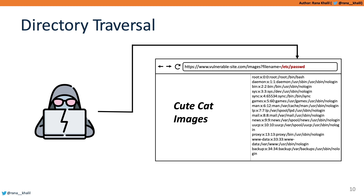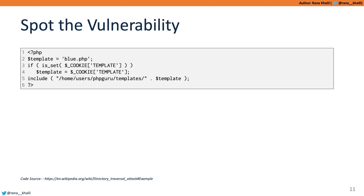Let's look at how these vulnerabilities are introduced in code. The root cause of 90% of web application vulnerabilities is that the application does not properly validate user input — meaning no or inadequate defenses ensure that input coming from the client side is not malicious. On the screen here is sample vulnerable PHP code. I'd recommend you pause the video and try to figure out which line is vulnerable, and then attempt to come up with an exploit.